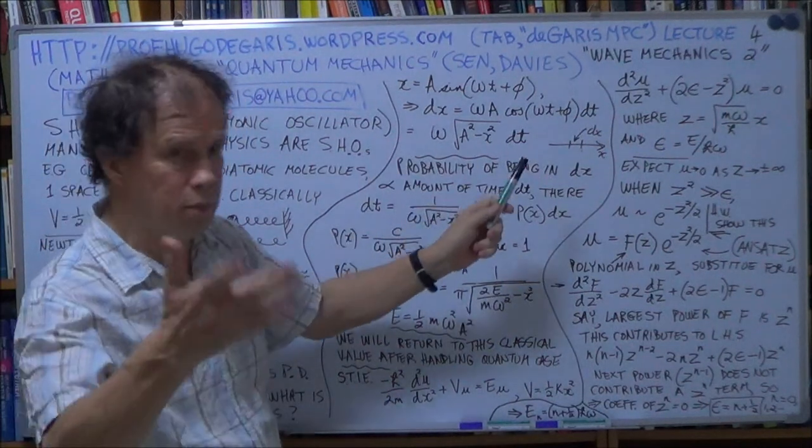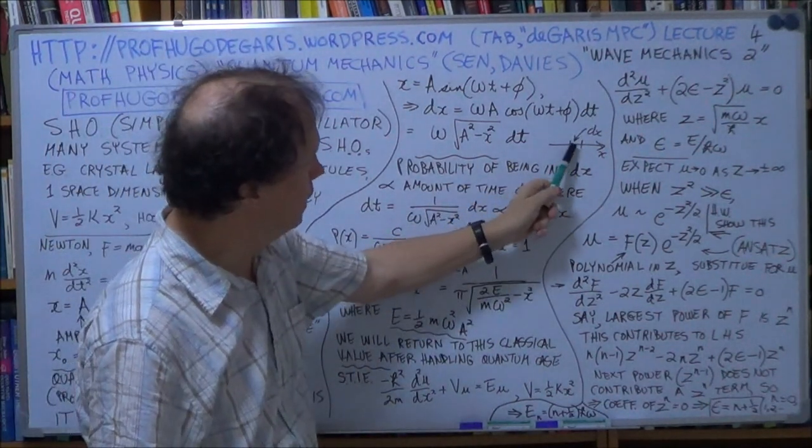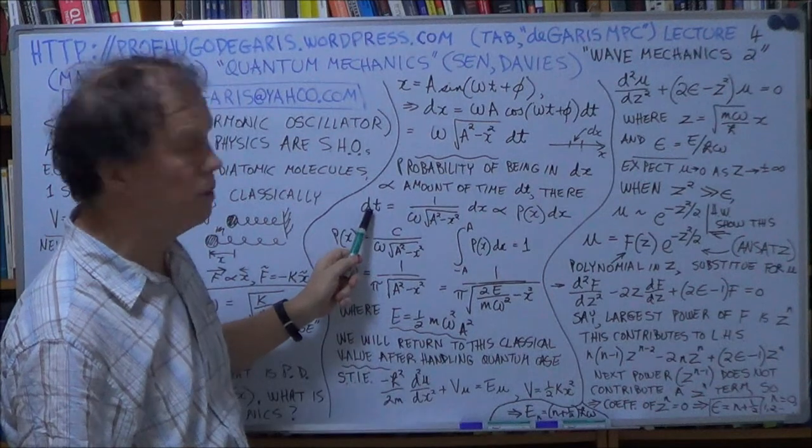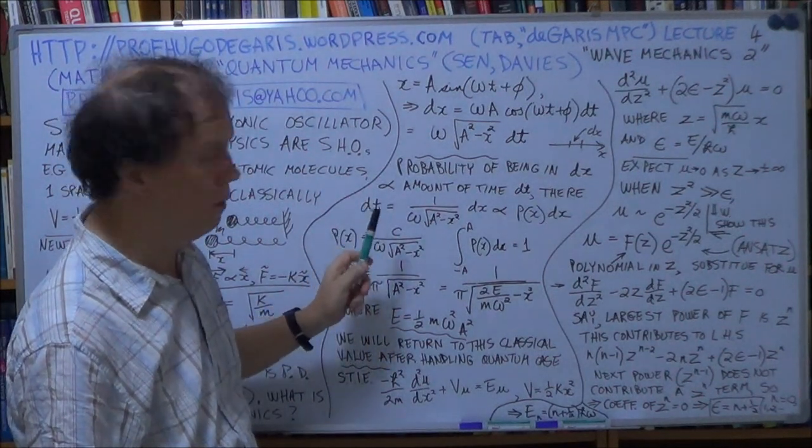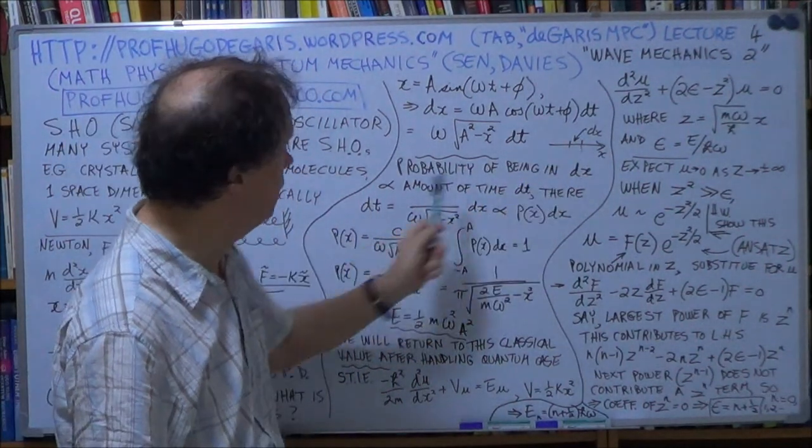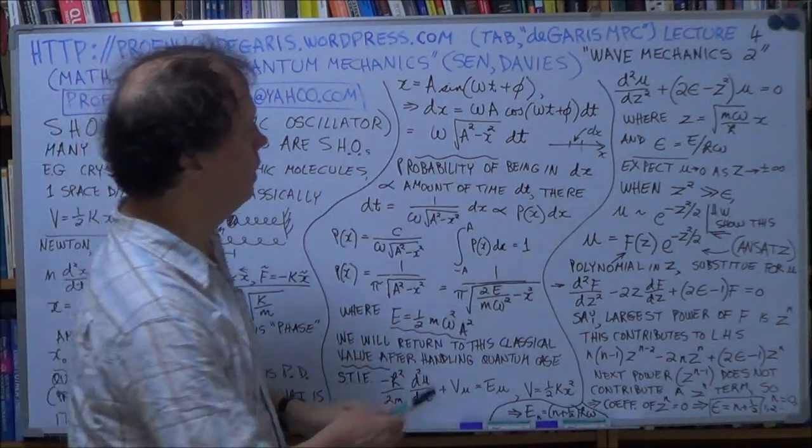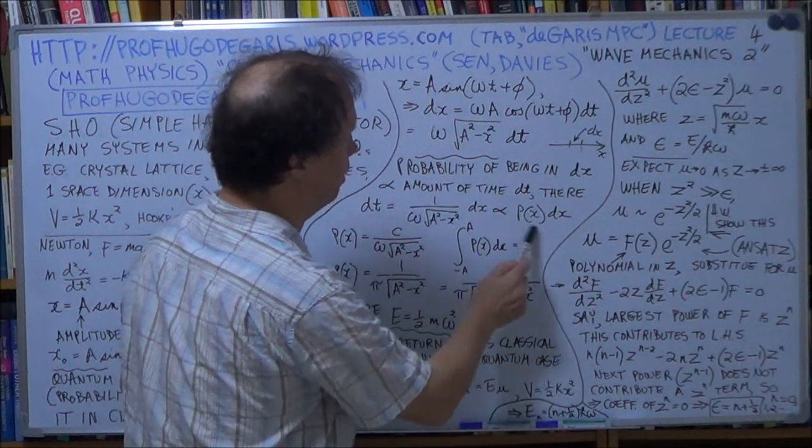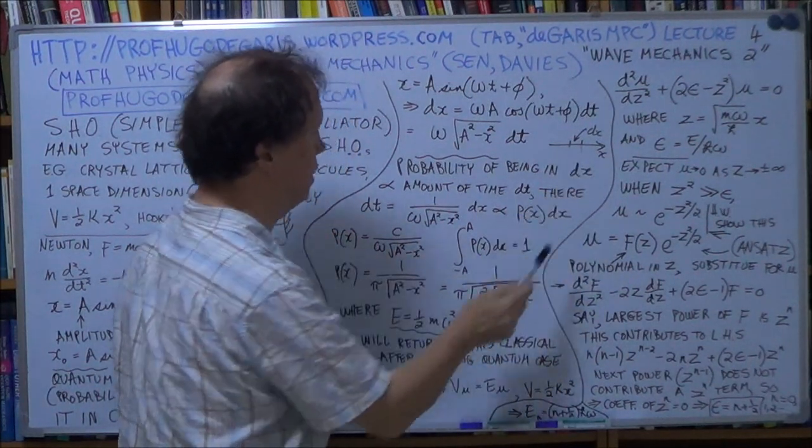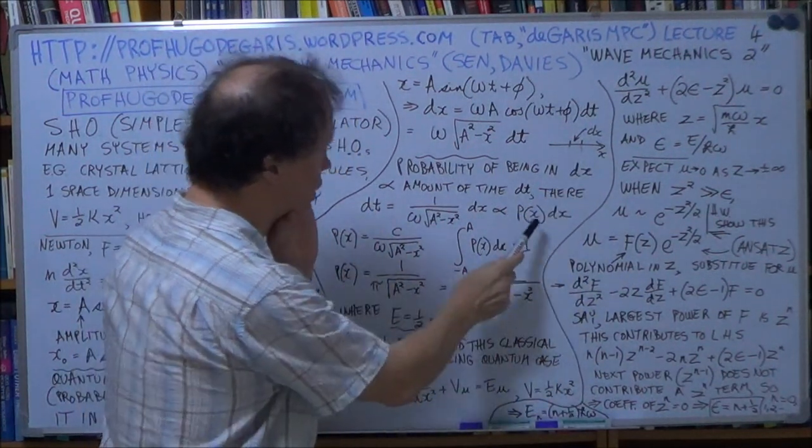And we just agreed before that the probability of being in that small x is proportional to dt. But the more time it spends here, dt, in this small gap, the higher the probability of it being there. But this is the probability of it being there, that much. So therefore, this is proportional to that.